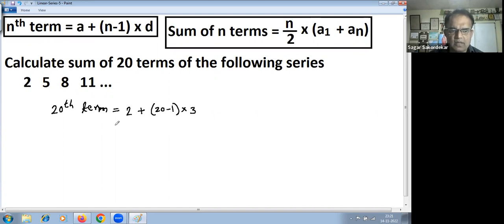So if you simplify, this is 2 plus 20 minus 1 is 19, 19 into 3 is 57, 57 plus this 2 is 59. So 20th term of this series is 59.